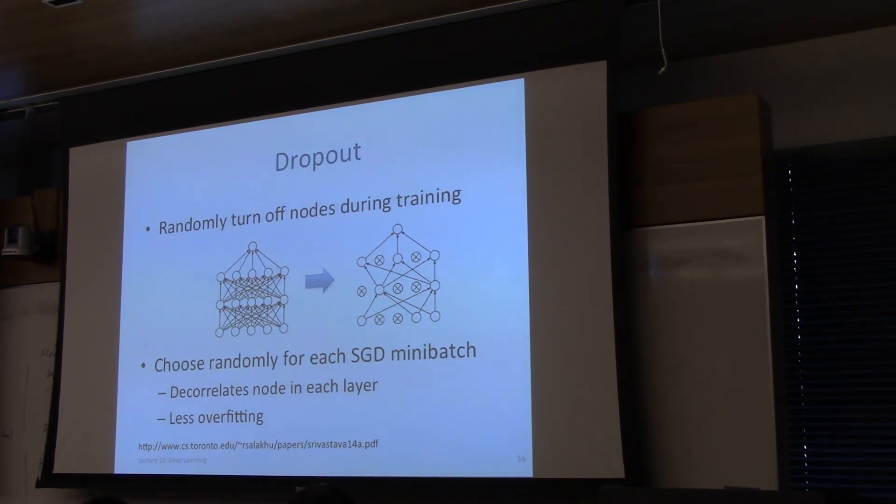Dropout randomly turns off nodes during training. So if this is my network, this is a raw input, hidden layer, hidden layer output, then during training, I'm going to randomly not look at some of the layers, some of the hidden neurons, randomly. So this is actually used for regularization, it makes the network more robust, and there is some theoretical analysis explaining why this is a form of regularization. The intuition is that it decorrelates the nodes in each layer. At a super high level, similar to the intuition for random forests, but the details are very different.